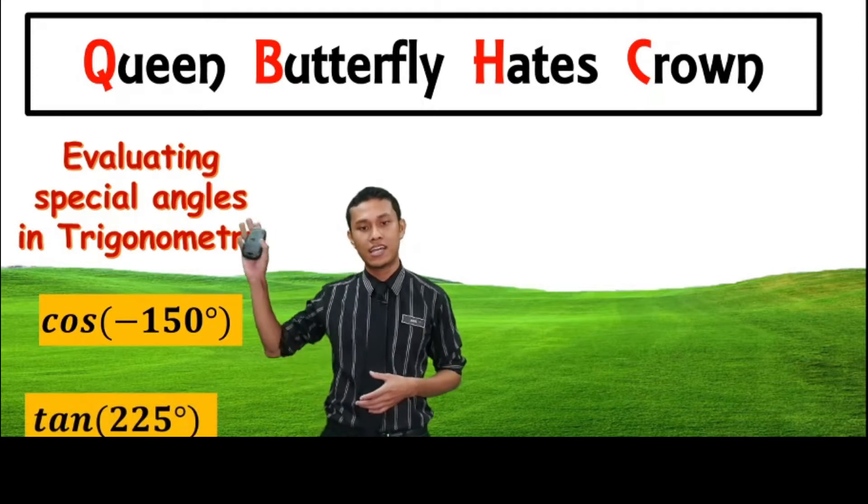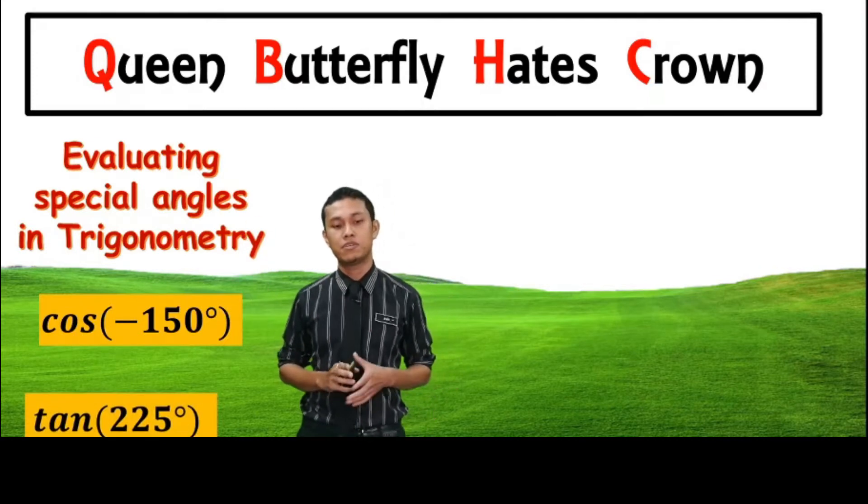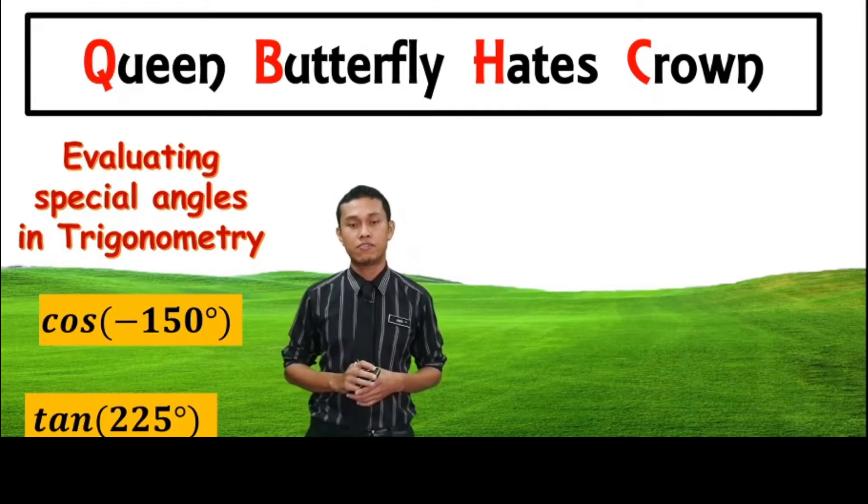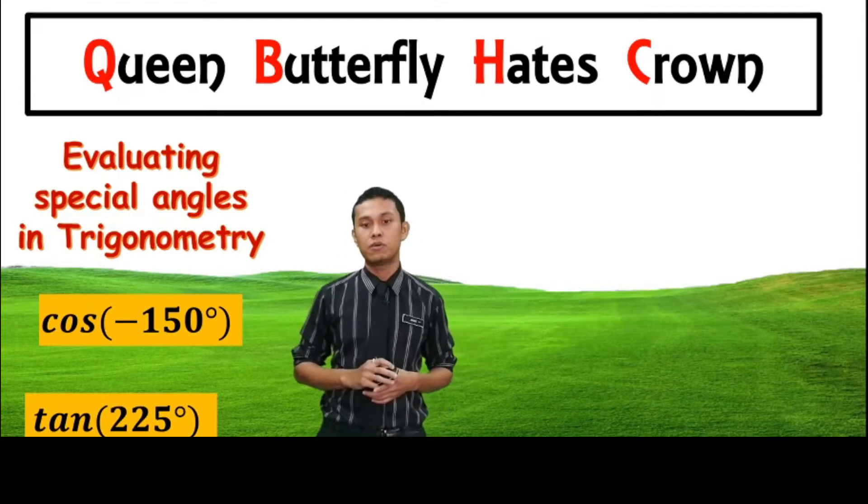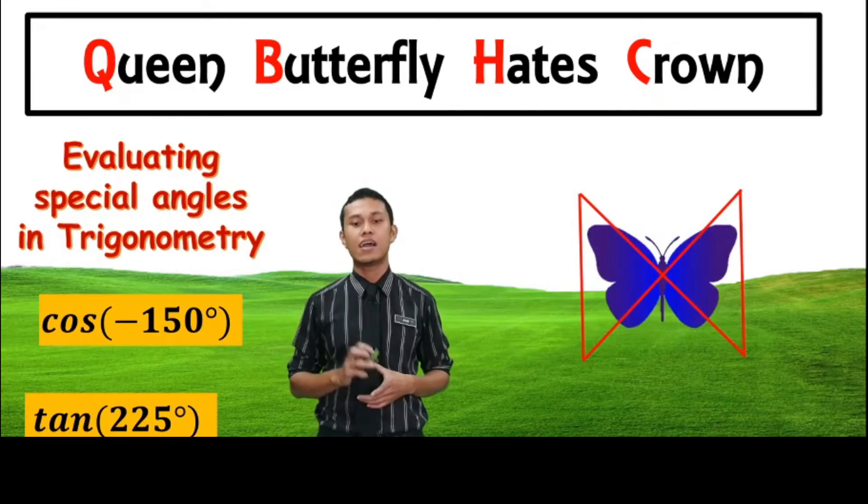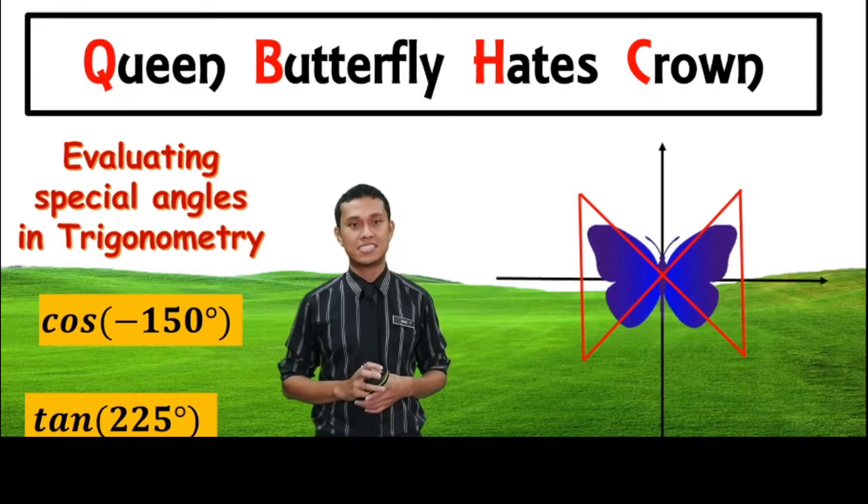For example, you can see on my left side, you have cos negative 150 degree and tangent 225 degree. So you can use this method or this technique to answer question by imagining a butterfly on the axis.